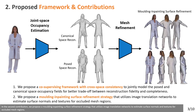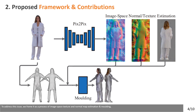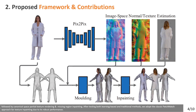In the second contribution, we propose a modern inpainting surface refinement strategy that utilizes image translation networks to estimate surface normals and textures for occluded mesh regions. Generating the canonical space reconstruction is especially challenging, since new surface regions emerge in this unobserved space, such as regions that are self-occluded in the original pose space. To address this, we frame it as image-based texture and normal map estimation and inpainting, followed by canonical space partial texture rendering and missing region inpainting.